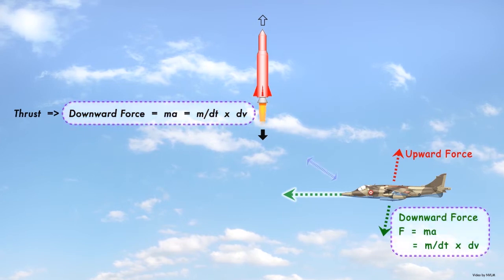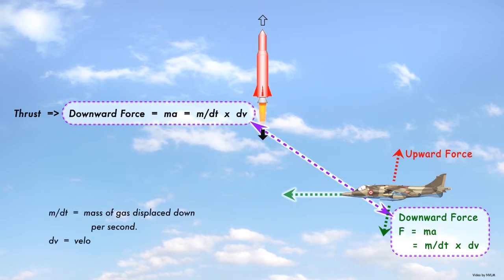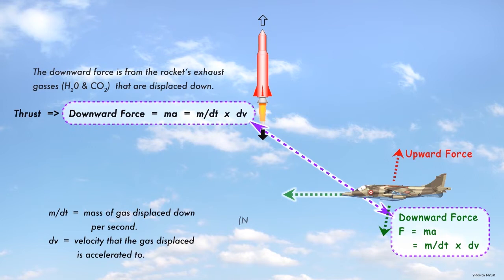This is the same equation used to calculate the thrust, or force, created by a rocket. Here, the force equals the mass of the exhaust gases displaced downwards each second times their velocity.